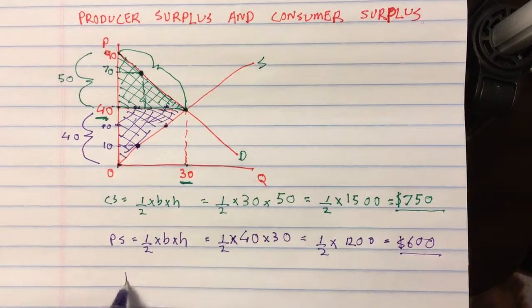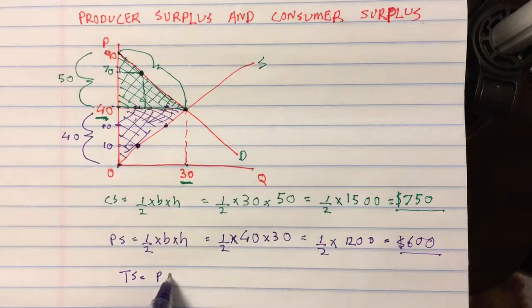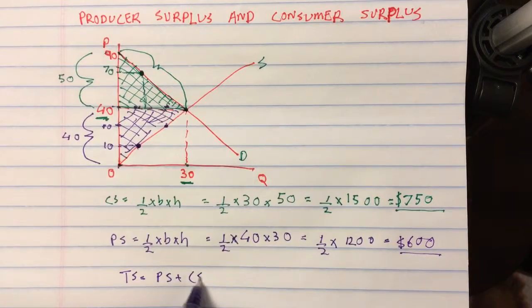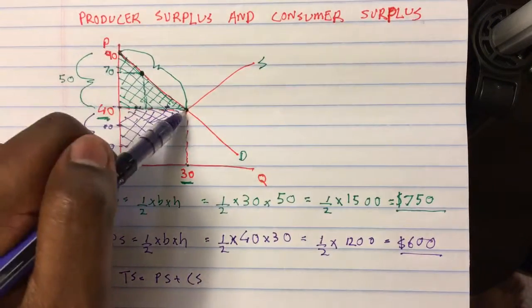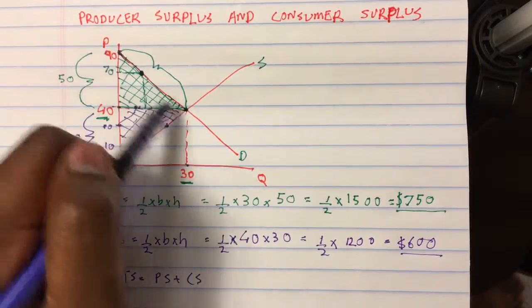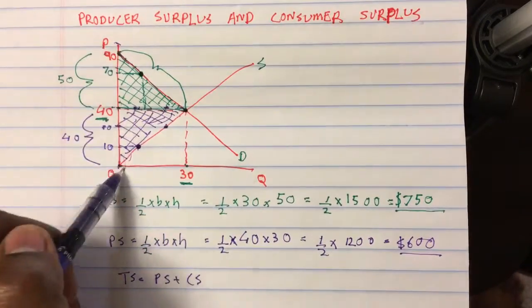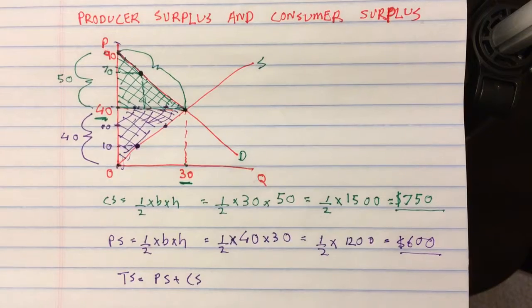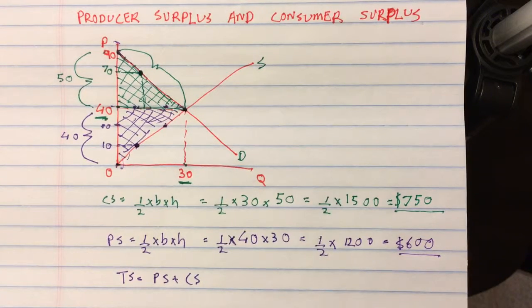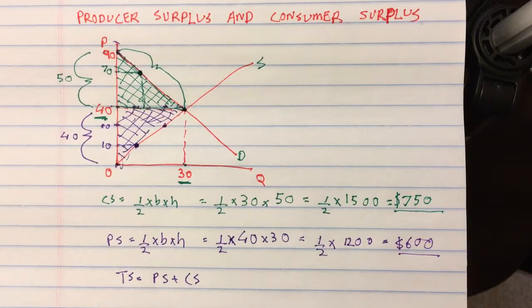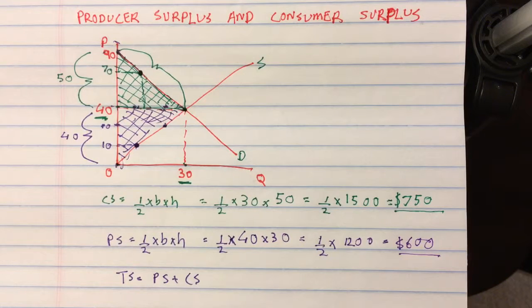My total surplus is basically the sum of producer surplus and consumer surplus, which is the area of this whole triangle or the sum of this green triangle and this purple triangle. Total surplus is telling us how much does the market gain or how much does the whole society gain because the market exists. So because this product is traded in the market, how much do producers gain by producing it and how much do consumers gain by purchasing the product?